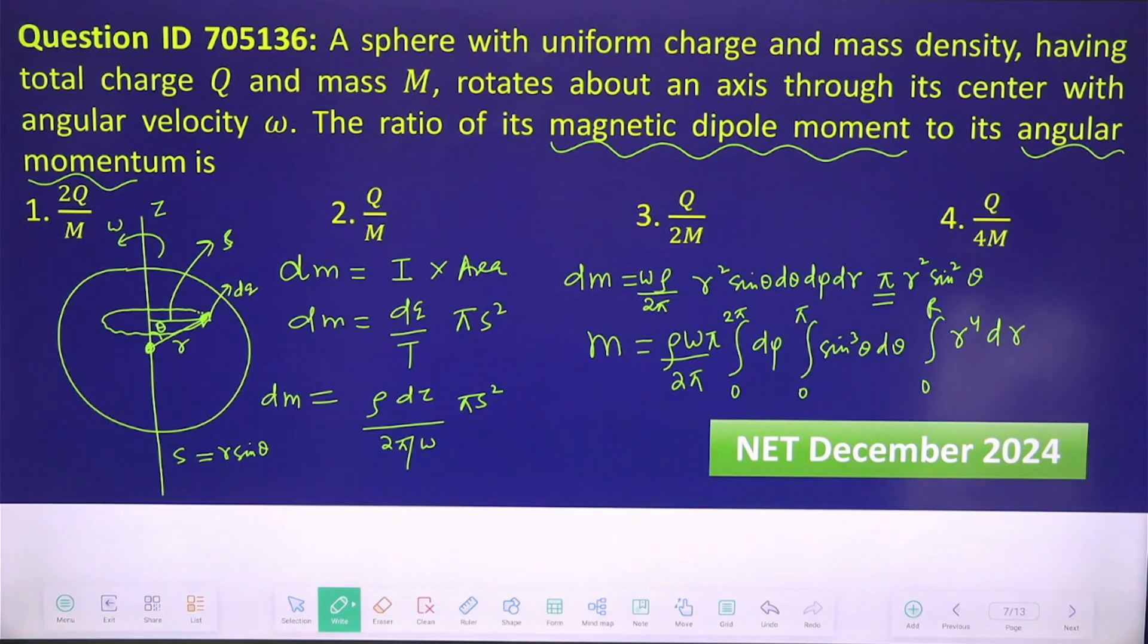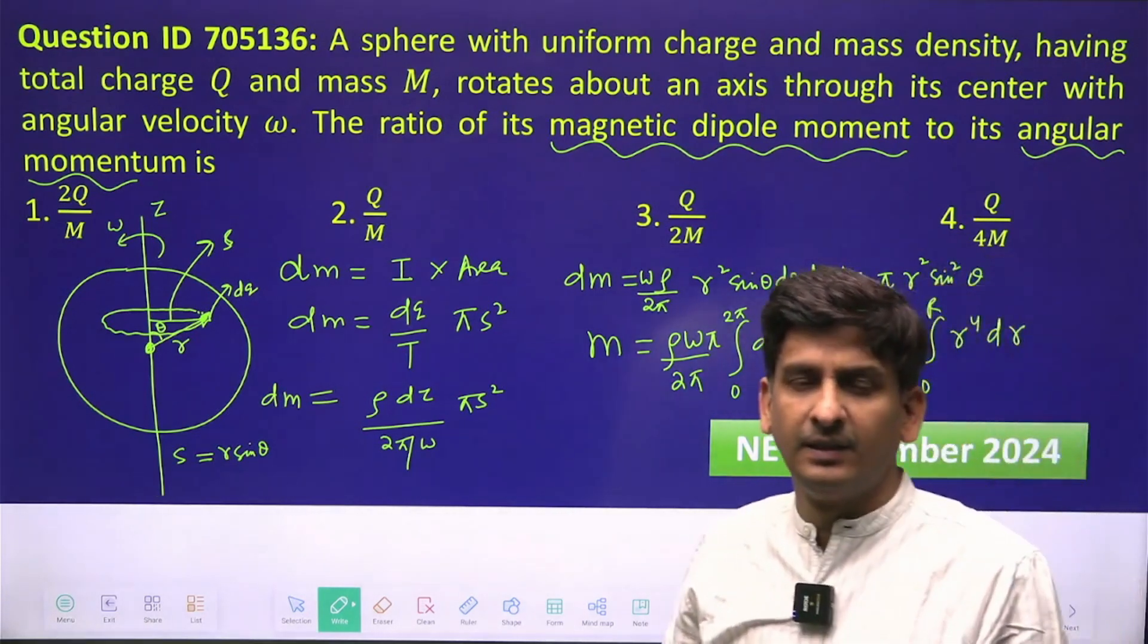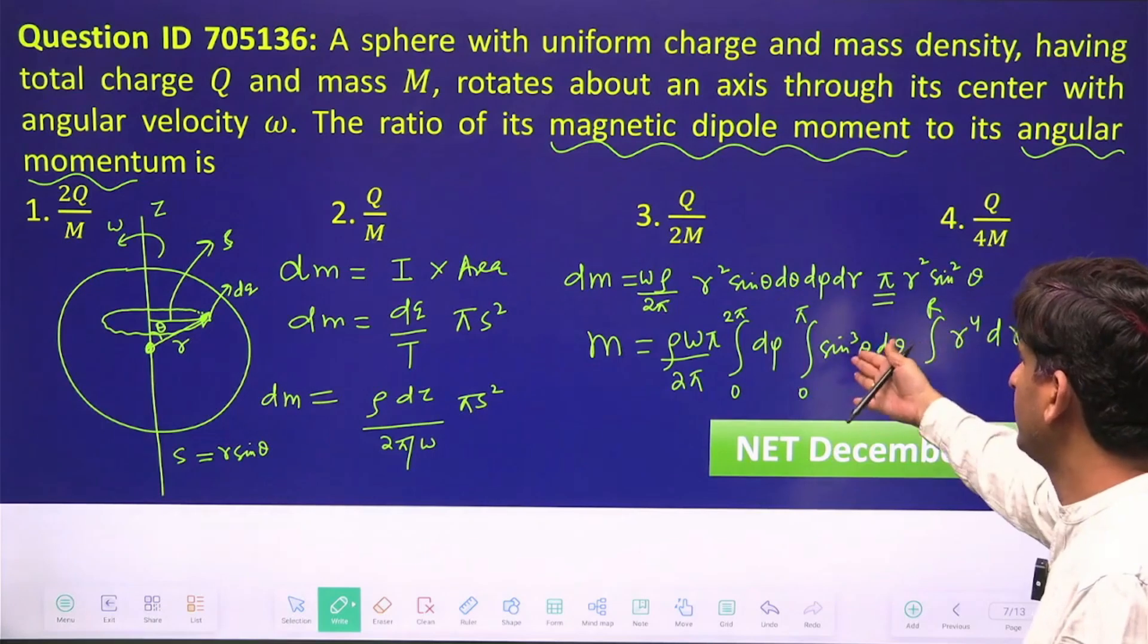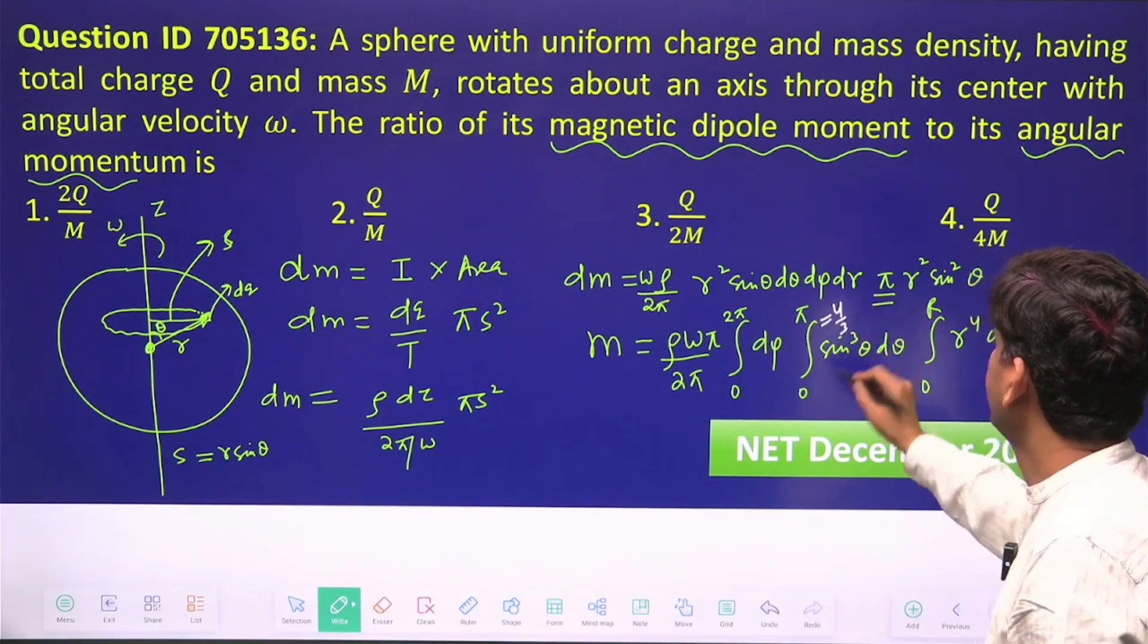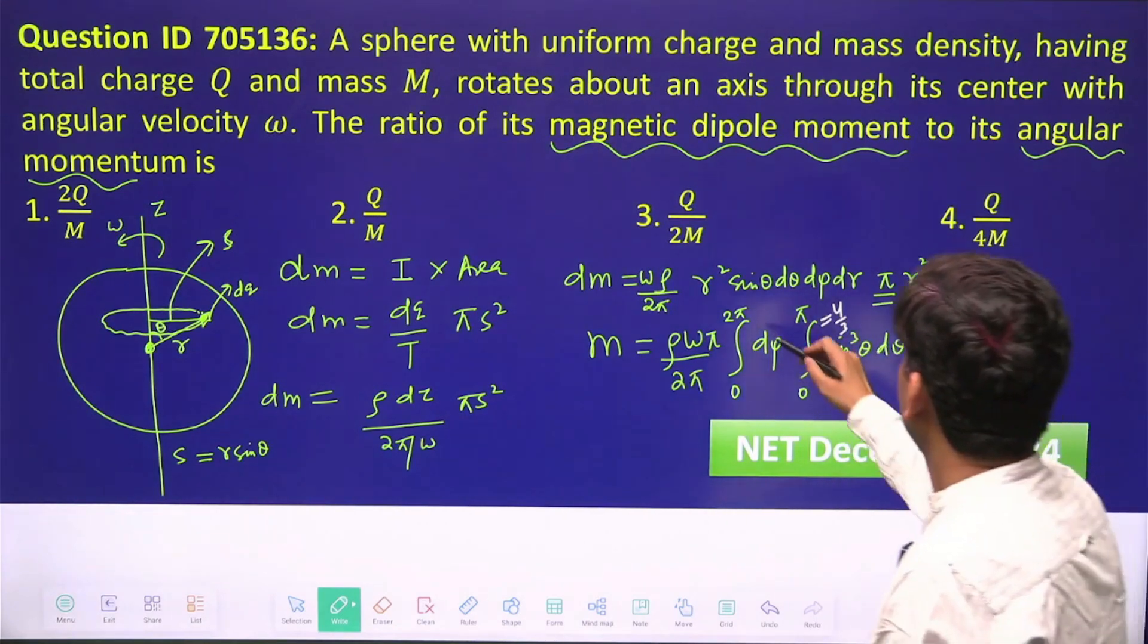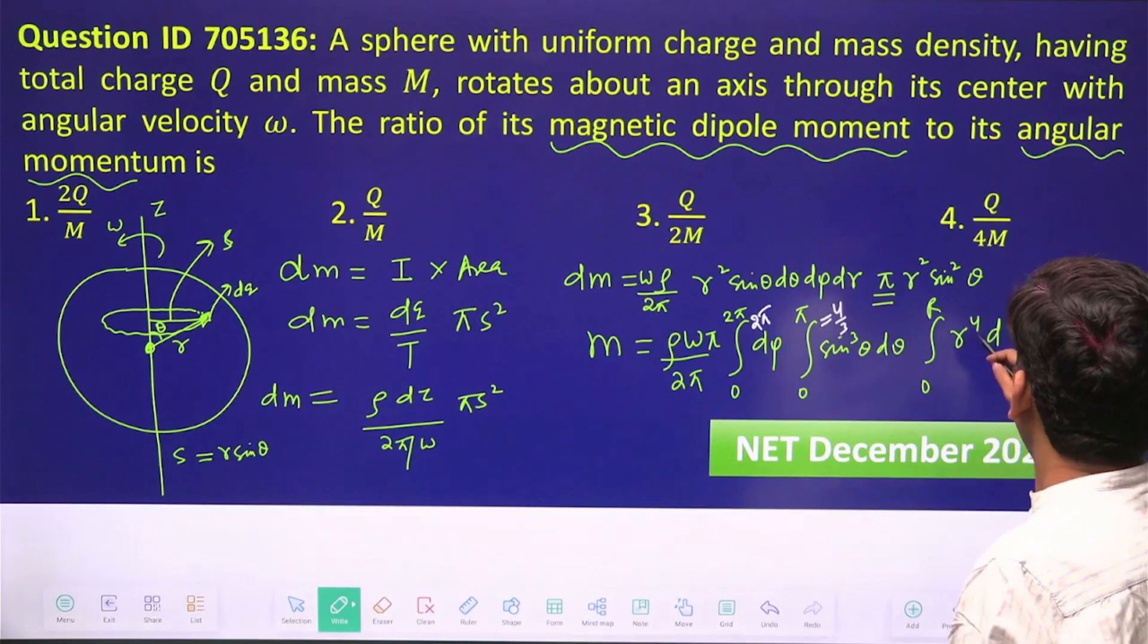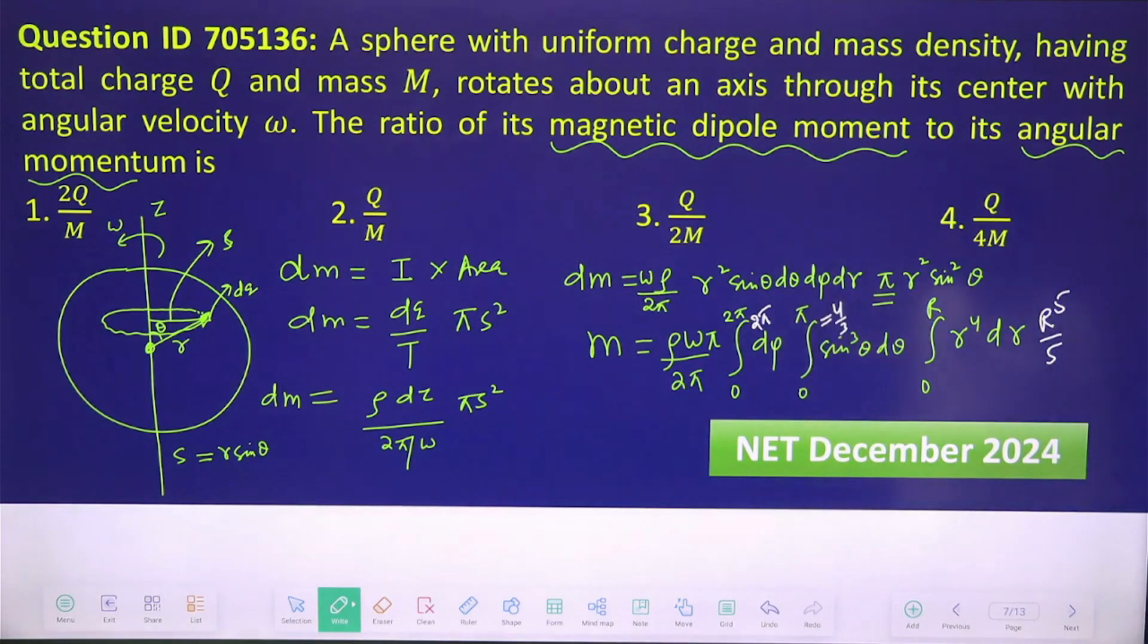So these are the integrals which we have to manage. This integral, you can use sin 3θ which is equal to 3 sin θ minus 4 sin³θ. From that, substitute the value of sin³θ, you will get the answer as 4/3. This you will get as 2π, and this will be r⁵/5.